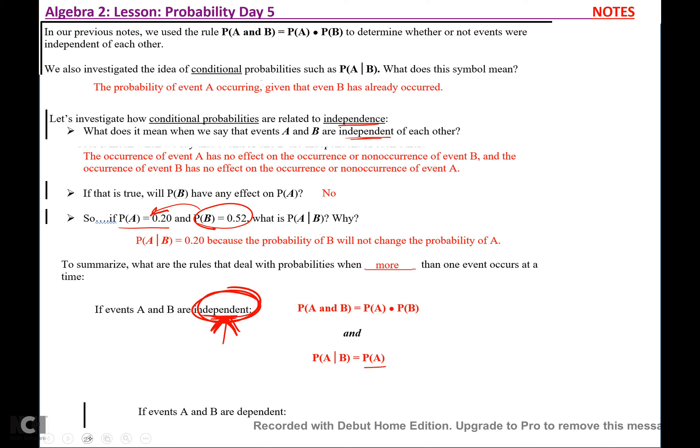If your events are not independent, then P(A|B) = P(A and B) divided by P(B).